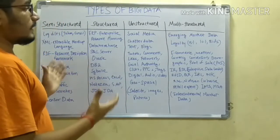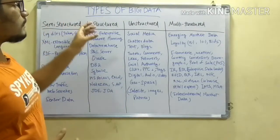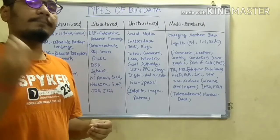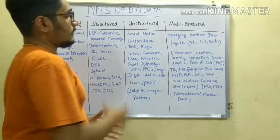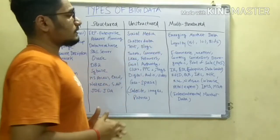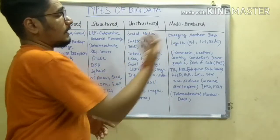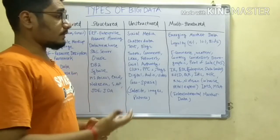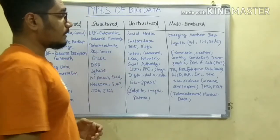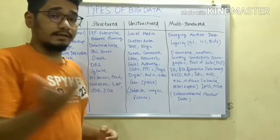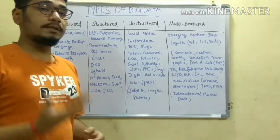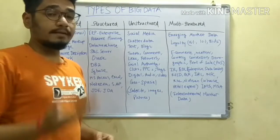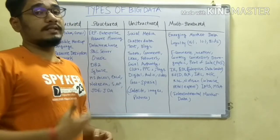Multi-structured data can be described as hybrid data — portions of semi-structured, unstructured, and structured data all come together under multi-structured data. This data mainly consists of emerging market data, which grows day by day: loyalty programs, bid prices, discounts, deals on Amazon and Flipkart and other e-commerce sites, weather data, currency conversions, demographic data, point of sale (POS), infrared (IR) data, and EDL — Enterprise Data Loader used in business intelligence and data mining.